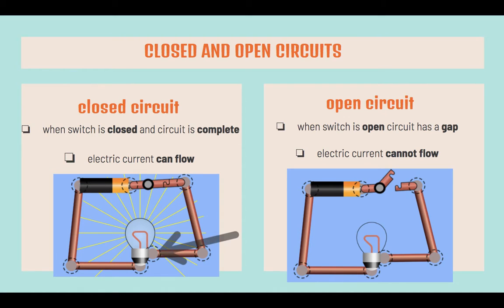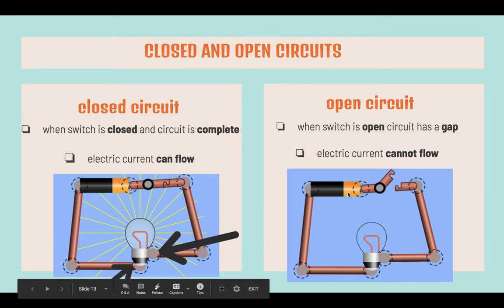Note that the metal case and metal tip of the bulb should both be connected to different ends of the battery using the wires. An open circuit occurs when the switch is open and the circuit has a gap. Electric current cannot flow and hence the bulb cannot light up.